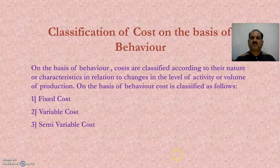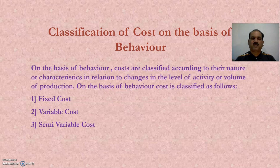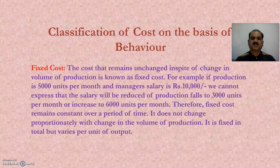Now let's see the classification of cost on the basis of behaviour or variability. On this basis, costs are classified according to their nature or characteristics in relation to changes in the level of activity or volume of production. On the basis of behaviour, cost is classified as: fixed cost, variable cost and semi-variable cost.